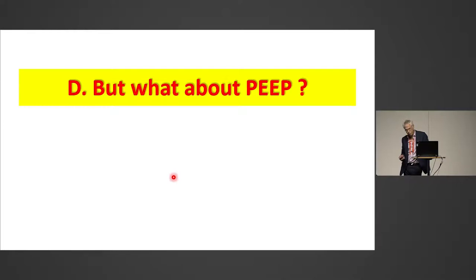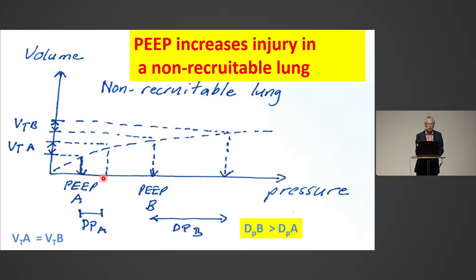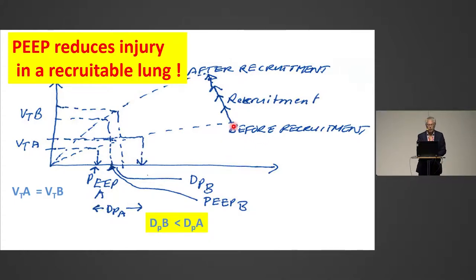But what about PEEP? Here I have a pressure-volume curve. If you start with PEEP here and this is a very stiff lung, and you have a tidal volume here, you see that will cause a driving pressure at this level. But when you increase the PEEP and keep the same tidal volume, you have much higher driving pressure — so that may increase injury. On the other hand, if it's a recruitable lung and you have moved this curve up, then for the same tidal volume you reduce the driving pressure and you reduce the injury.